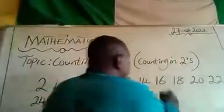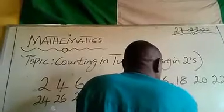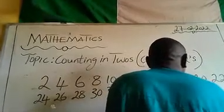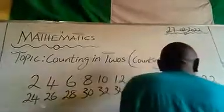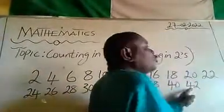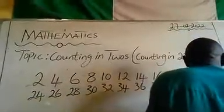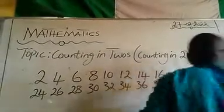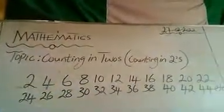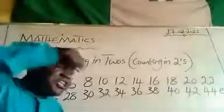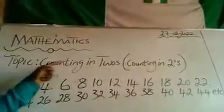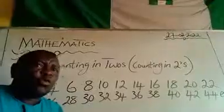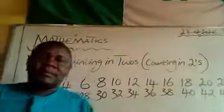When I add 2 to this 36, I will have 38. When I add 2 to this 38, I will have 40. When I add 2 to this 40, I will have 42. When I add 2 to this 42, I will have 44. You keep on adding 2 to each number. Counting in 2s. Thank you so much.